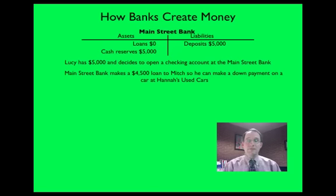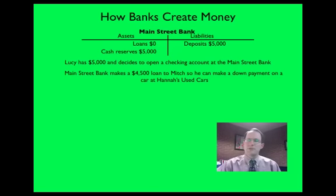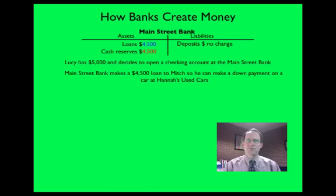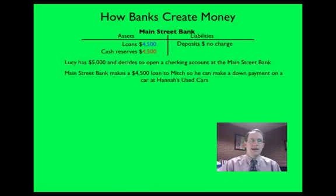Step two: Main Street Bank makes a forty-five-hundred-dollar loan to Mitch so he can make a down payment on a car at Hannah's Used Cars. What does that do to the bank's T-account? Loans show an increase — they now have a loan of forty-five hundred dollars. Cash reserves decreased by forty-five hundred because that money went out the door to Mitch. Deposits remain unchanged because nobody made a new deposit after Lucy's five-thousand-dollar deposit.